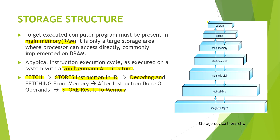This is the hierarchy of storage devices. Registers have the smallest memory, then cache memory, then main memory. Electronic disk has greater memory in comparison to all three of those. Magnetic disk, which we can say is secondary memory, has even more. And magnetic tapes can be understood as tertiary memory. This is the storage device hierarchy.